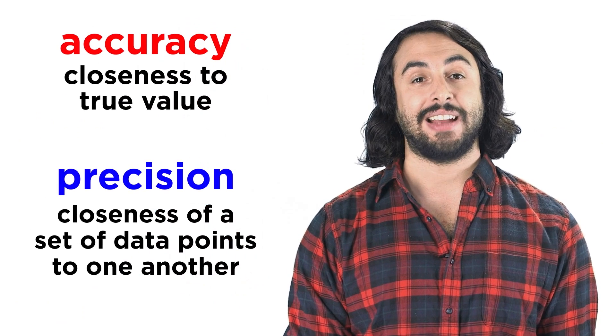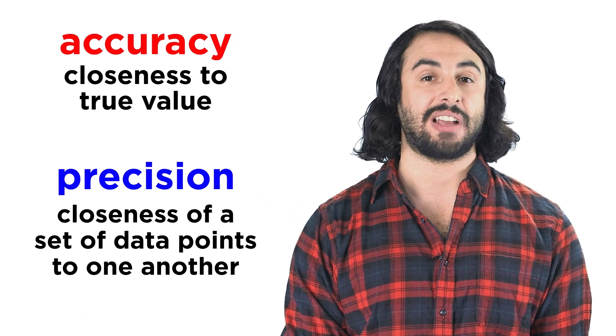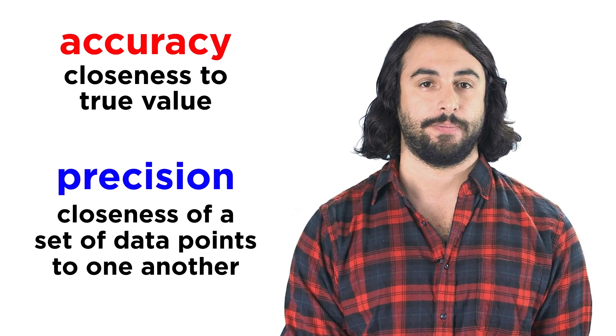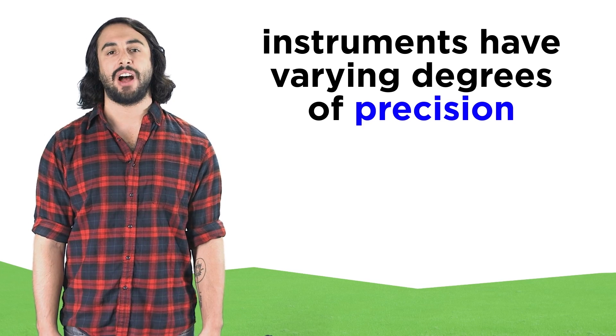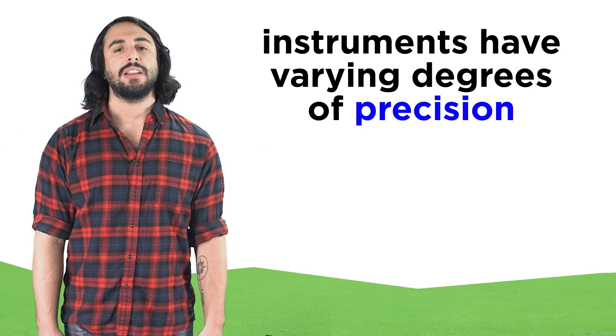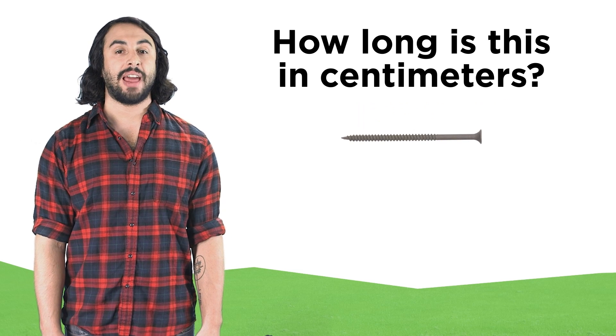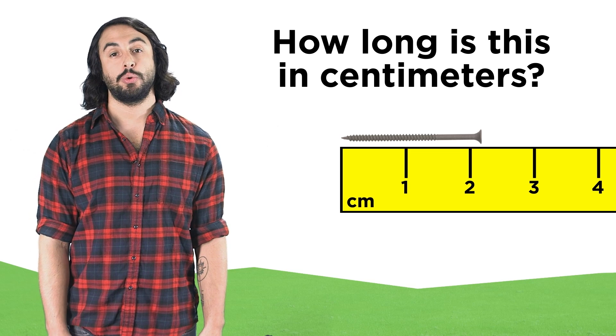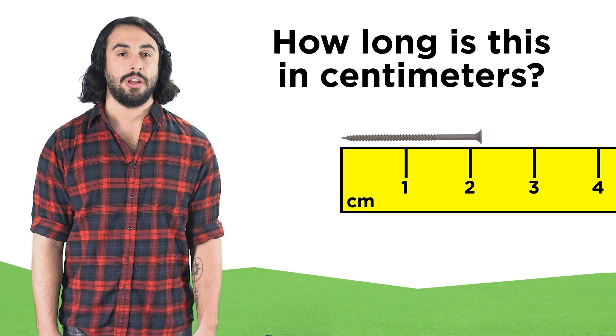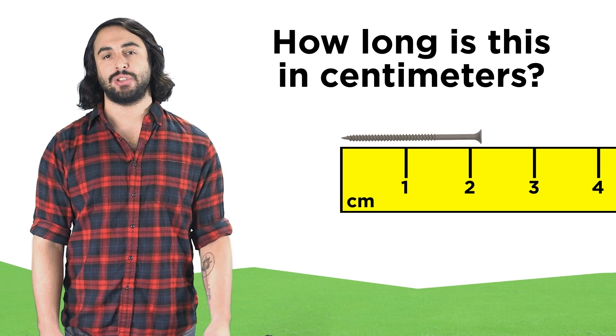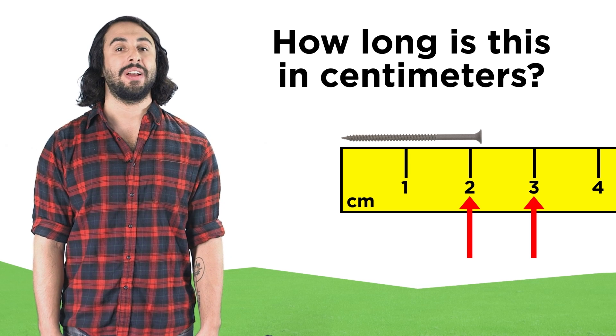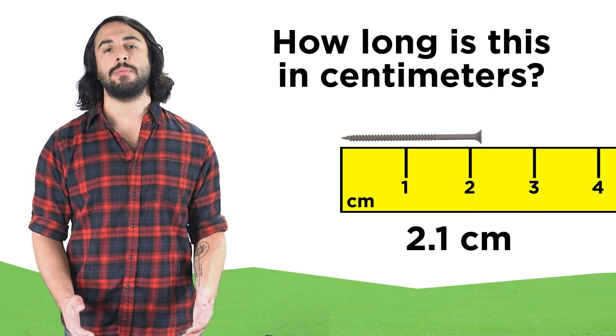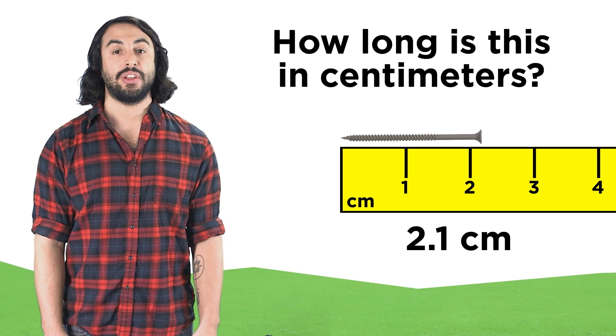Now that we understand accuracy and precision in this context, let's learn about another context for the word precision. We could also talk about the precision of an instrument. Let's say we want to measure the length of an object in centimeters. This ruler displays centimeters, so we could say that this object is between these two centimeter markings, and then we could estimate one more digit beyond that, the tenths place.